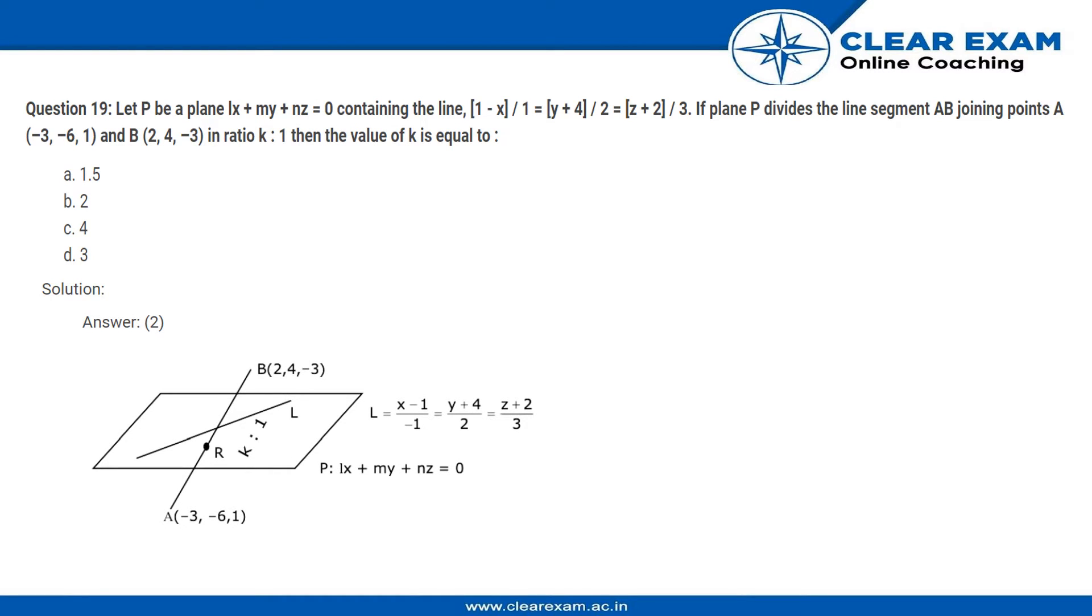We have a plane P having the equation LX plus MY plus NZ equal to 0 and it contains the line with this equation as you can see. If plane P divides the line segment AB joining points A and B